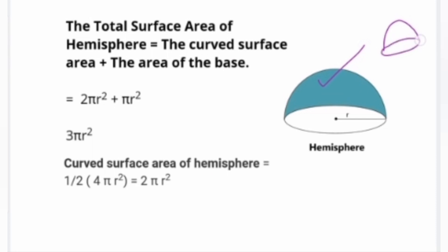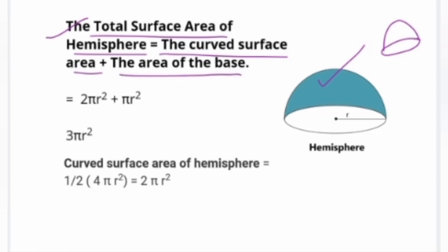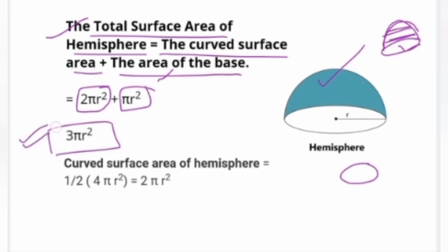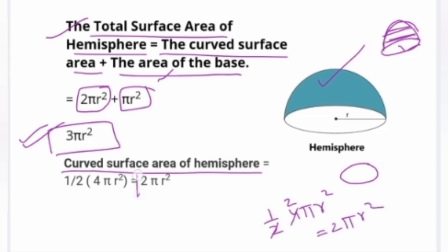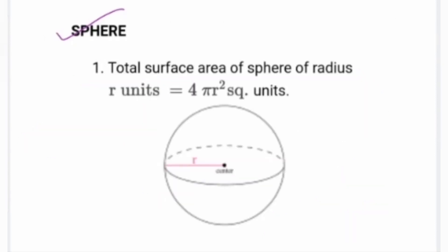A hemisphere is the half portion of a sphere. The curved surface area of a hemisphere is 2πr². The total surface area of the hemisphere (including the base) is 2πr² + πr² = 3πr². The total surface area of a complete sphere is 4πr².